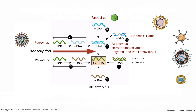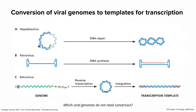Some viral genomes — hepadna, parvo, and retroviruses — have to be converted to templates suitable for mRNA synthesis. The hepatitis B genome is partially double-stranded with a gap, a protein on the end, and a piece of RNA. It gets into cells and is repaired by repair enzymes: the protein and RNA are removed, the gap is filled, and now it can serve as a template. Parvoviruses are single-stranded and can't be transcribed, so the cell repairs them to make a double-stranded copy. Retroviruses are RNA genomes copied to double-stranded DNA, which integrates and is then suitable for transcription.